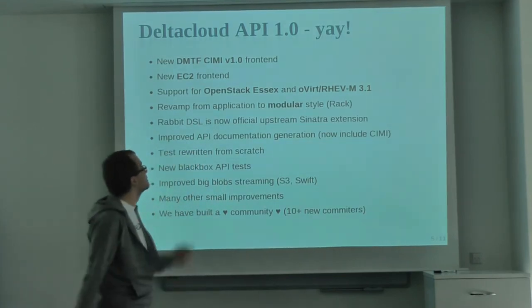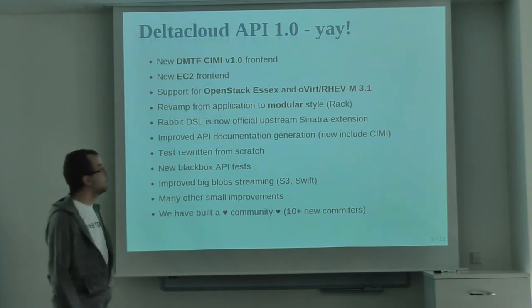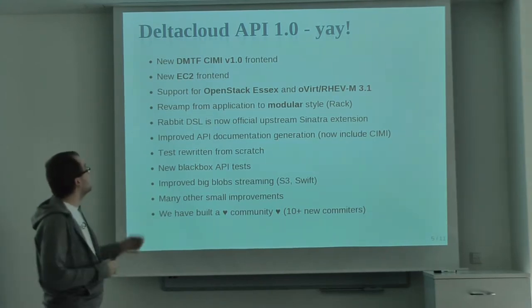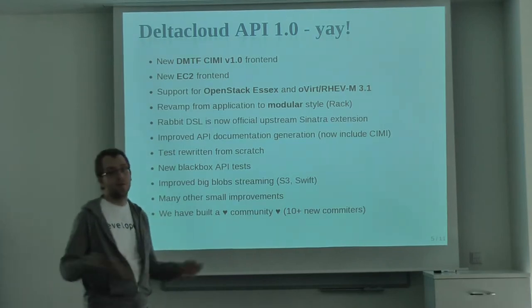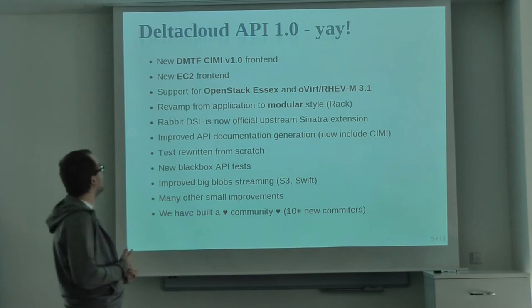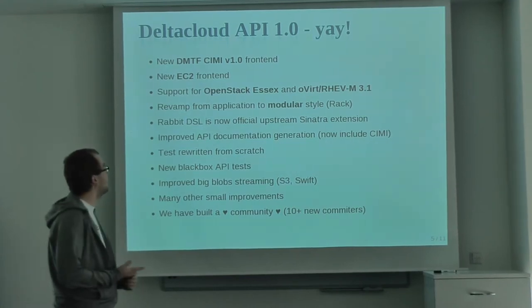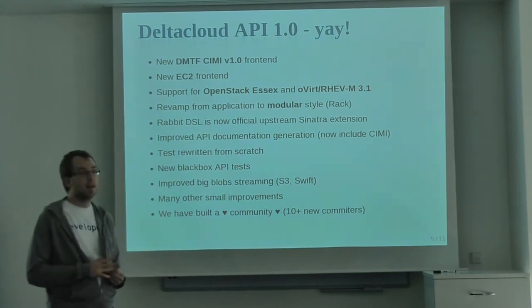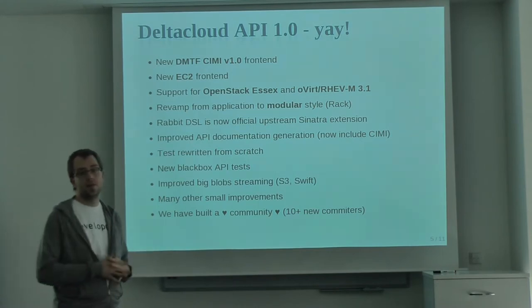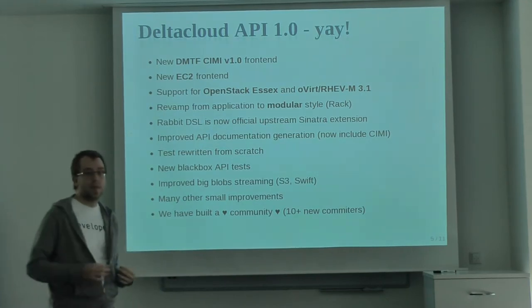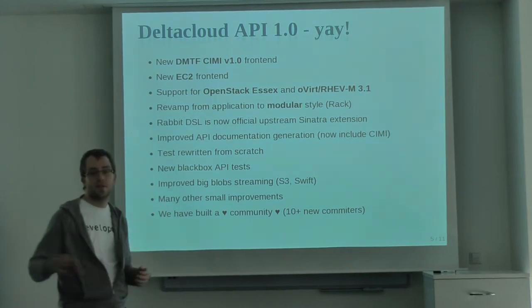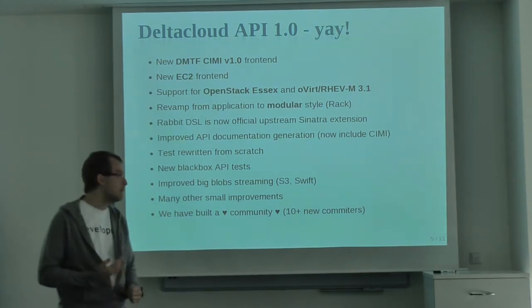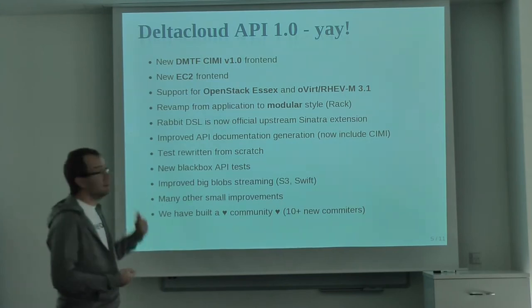We have Delta Cloud API 1.0, released a couple months ago. We support the DMTF CIMI 1.0 spec — Delta Cloud is currently the first implementation in the world that implements CIMI. We have an EC2 frontend. The initial reason we started working on it was that the OpenStack community said they didn't want to maintain an EC2 frontend anymore, and they found we had an OpenStack driver in Delta Cloud.